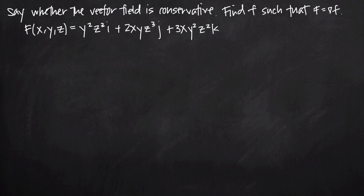In this video, we're going to be talking about conservative vector fields in three-dimensional space. In this particular problem, we've been asked to determine whether the vector field is conservative, and if it is, to find a function lowercase f such that the vector field capital F is equal to the gradient of our function lowercase f. We've been given this vector field equation, which is y²z³ i + 2xyz³ j + 3xy²z² k.